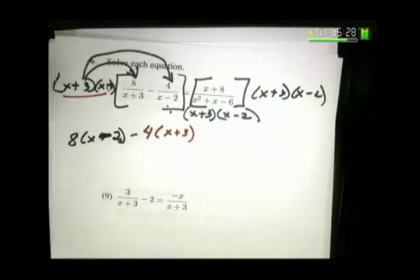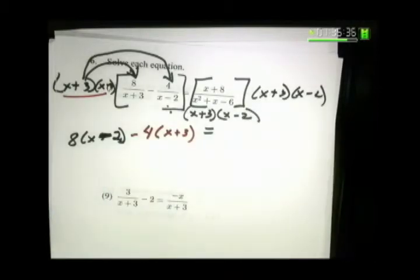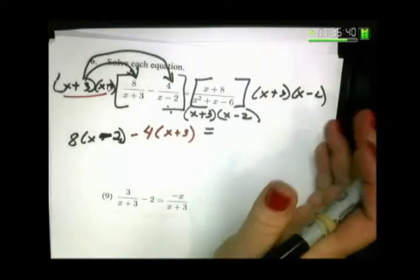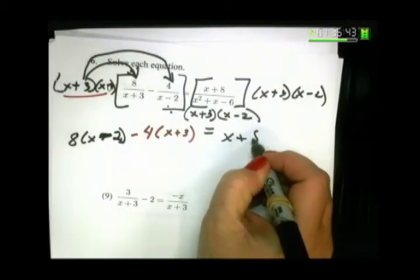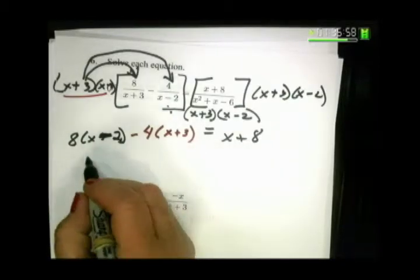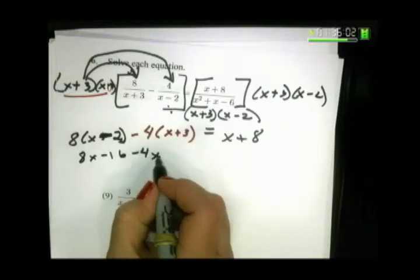When this mess multiplies the second one, the x minus twos are going to cancel, and my x plus three will be left there. So, you don't want to cross them out, because then you're going to think there's nothing left. But when you multiply the second one, it still multiplies. Now, when I multiply the right side, the denominators cancel. So, I'm just left with x plus eight. The beauty of this is you got rid of all your fractions. No longer do you have fractions there, and I know that you hate those. So, then you just multiply it out. Eight x minus sixteen minus four x minus twelve equals x plus eight.